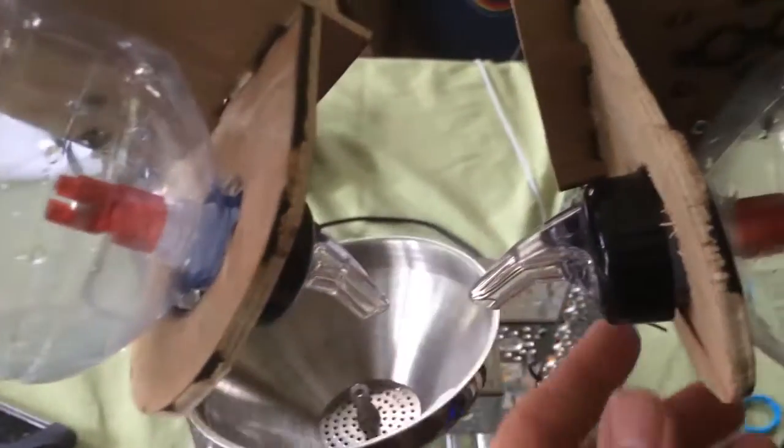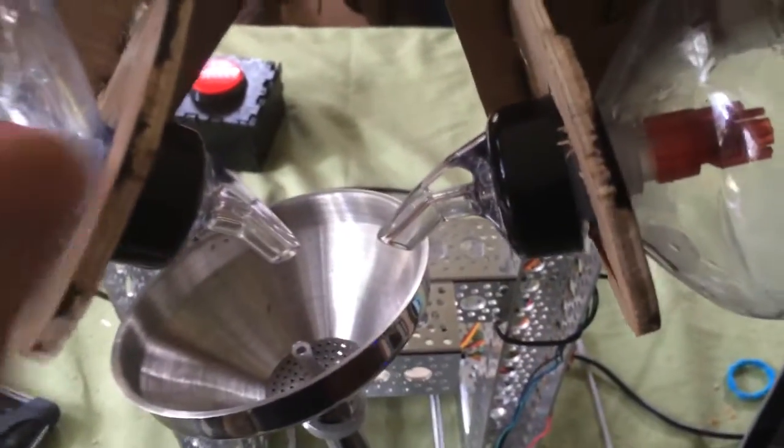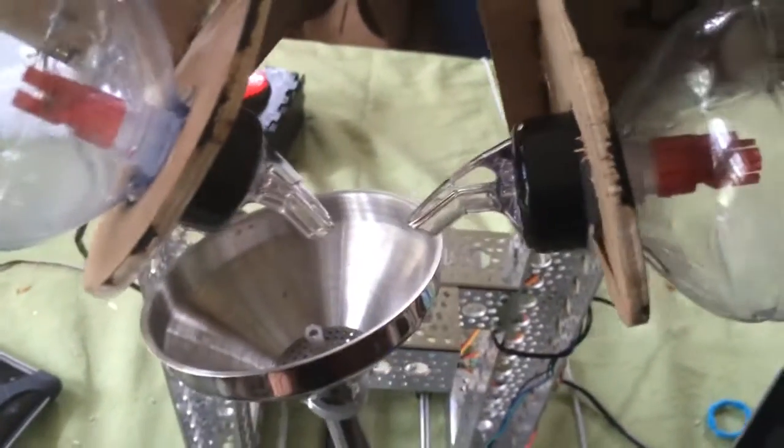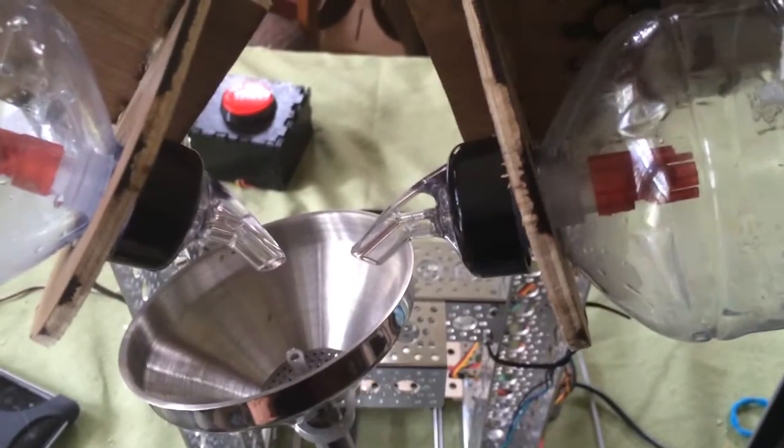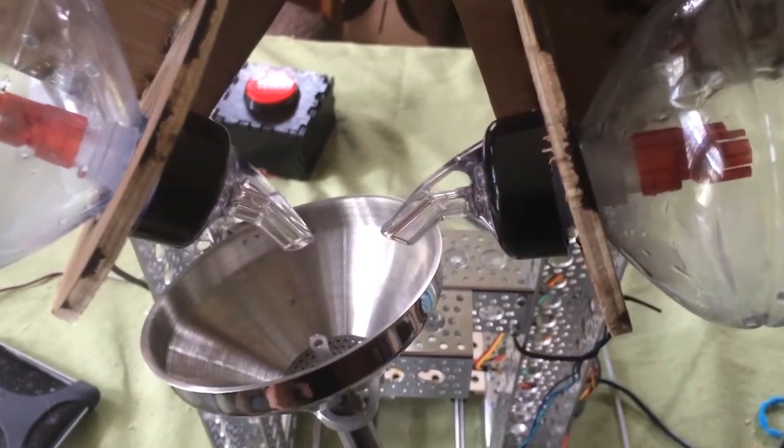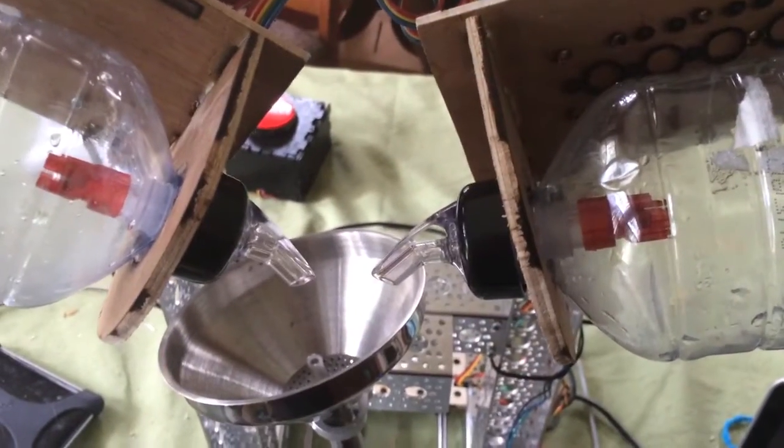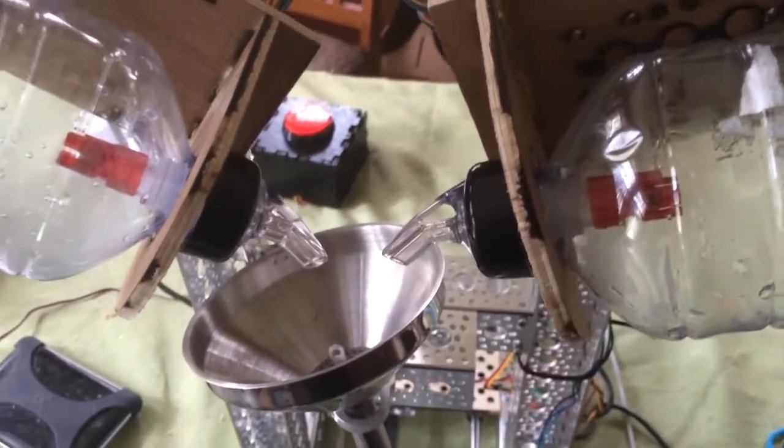These tips dispense one ounce each every time they pour, and a little ball bearing shifts to keep them from pouring out more than a shot each time. I really don't have any problem with measuring. I don't have to time it or anything, because the dispenser tips do it for me.